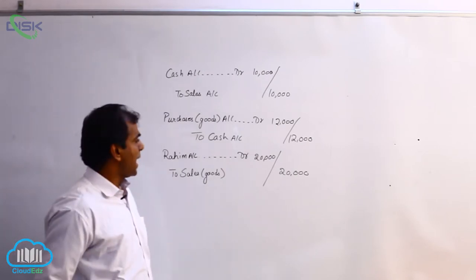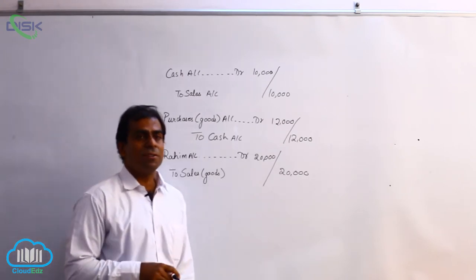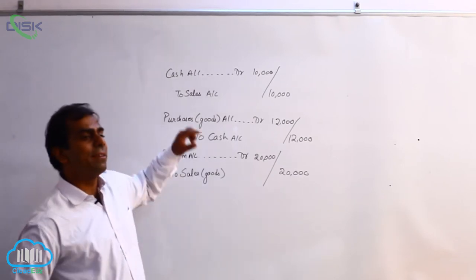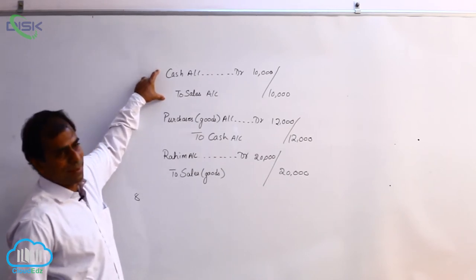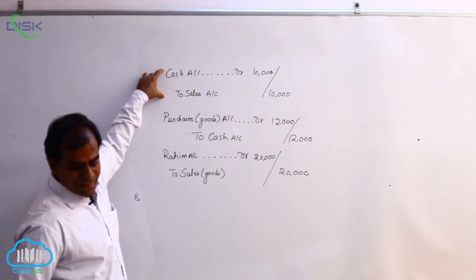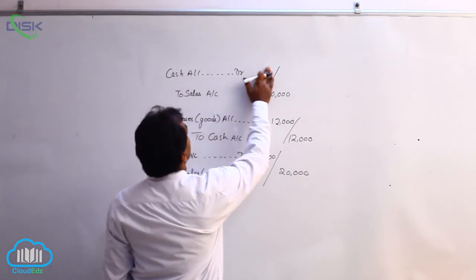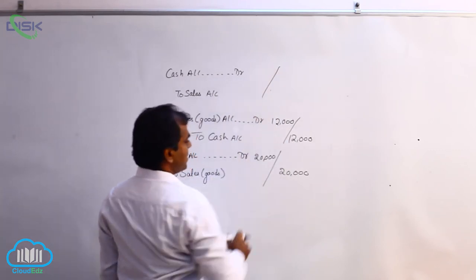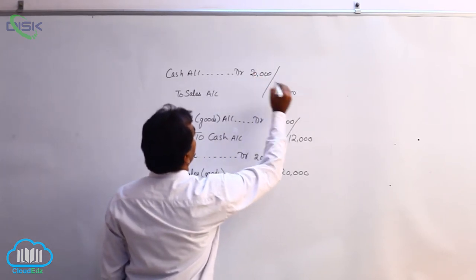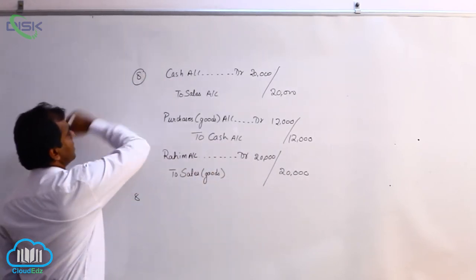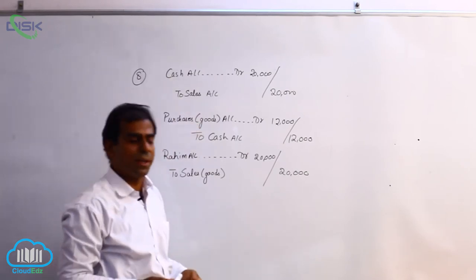The transaction on 8th is again cash sales. Since it is cash sales just like the first entry, the entry remains the same — cash is coming in and goods are going out. The journal entry is: Cash Account Dr to Sales Account, 20,000. Narration: Being goods sold for cash.